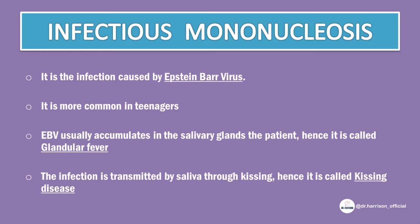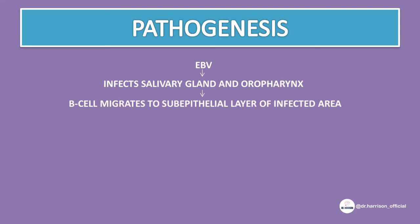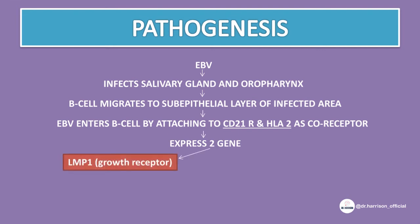Now let's see the pathogenesis. Epstein-Barr virus first infects the epithelial cells of the oropharynx and salivary gland. Due to inflammation, B cells migrate to the sub-epithelial layer. Epstein-Barr virus attaches to B cells via the CD21 receptor with HLA-2 antigen as its co-receptor. It expresses two antigens which help in immortalization of B cells: Latent membrane protein 1, which is expressed on the cell surface and acts as a growth receptor by activating NF-κB and JAK-STAT pathway.